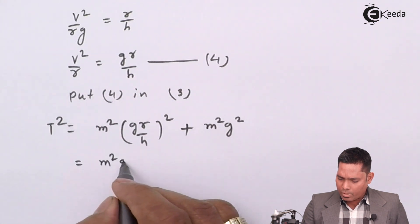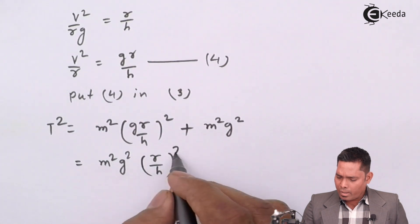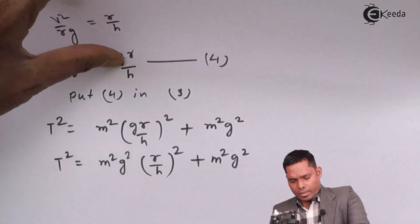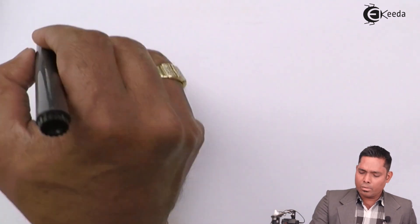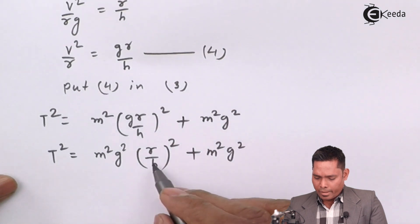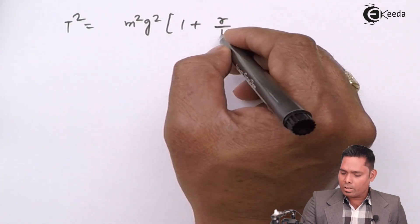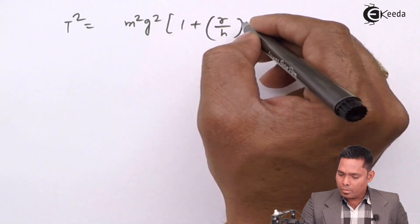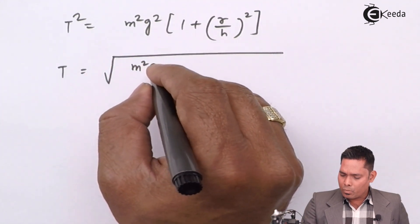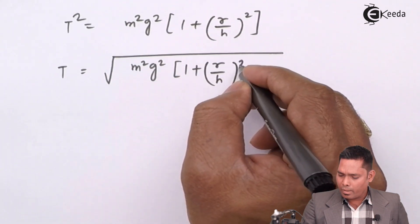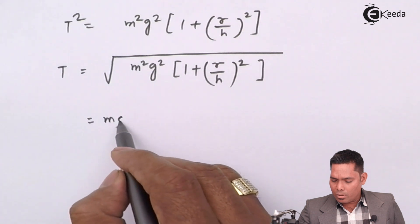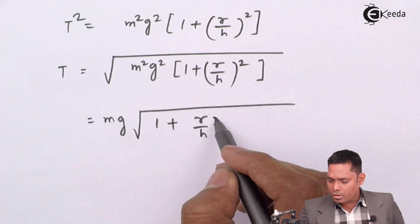Opening this up: T² = m²g²(r/h)² + m²g². Taking m²g² common, I am left with (r/h)² + 1, so T² = m²g² [1 + (r/h)²]. Taking the square root, T equals mg times the square root of 1 + (r/h)², where mg is the weight of the bob. This is the final expression for the tension in the string.